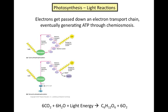In the light reactions, electrons get passed down an electron transport chain, eventually generating ATP through chemiosmosis. Similarly to the electron transport chain in cellular respiration, the energy from the electrons flowing down the chain causes hydrogen ions to be pumped across the membrane. When they flow back through the ATP synthase, ADP is phosphorylated to become ATP. The creation of ATP during photosynthesis is called photophosphorylation.